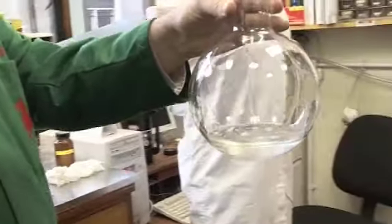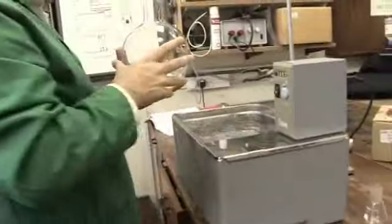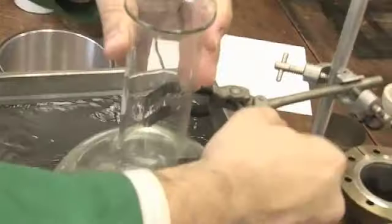And now warm the solution to about 70 degrees. We're going to do that using the water bath. So there's our sugar and our silvering solution. And we'll leave that a few moments and we'll come back and see what happens.